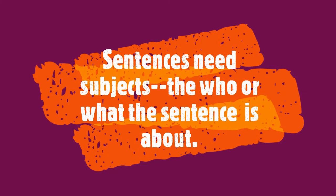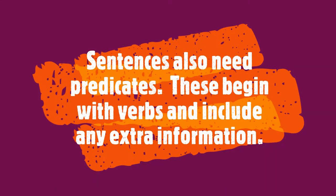So the first thing you need to do is check your sentences. Sentences need two things. The first is a subject — who or what the sentence is about. Next, sentences also need a predicate. These begin with a verb